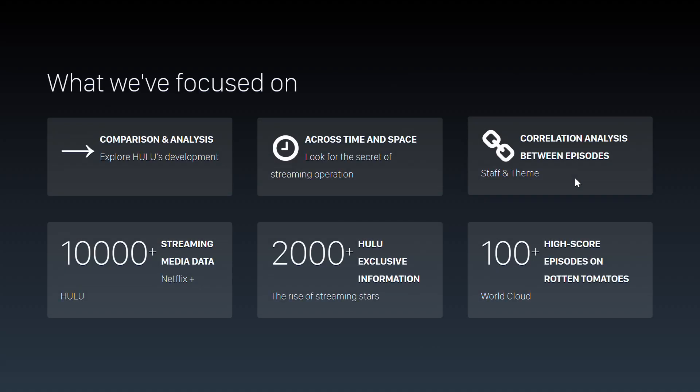Most of our data comes from Kaggle's open source data site, with a total of over 10,000 pieces of data. This data covers dimensions such as production time, region, and content type for movies and TV shows on different streaming platforms. There is also a portion of data that I personally crawled from Rotten Tomatoes, covering ratings and awards for entire episodes.